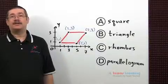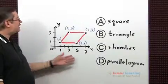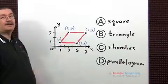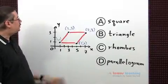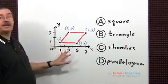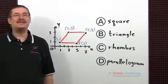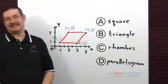To answer this question, just plot the points and connect them as indicated in the problem. If you notice carefully, you're going to get a figure with two pairs of parallel sides, which means it's a parallelogram — choice D.